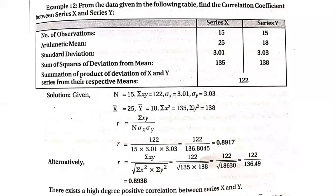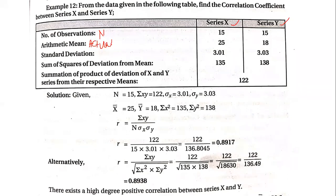From the series, we have data for series X and series Y. Both series are present. They have given us number of observations, that is n = 15 and 15 for both the series. Then we have the arithmetic mean — x-bar and y-bar.